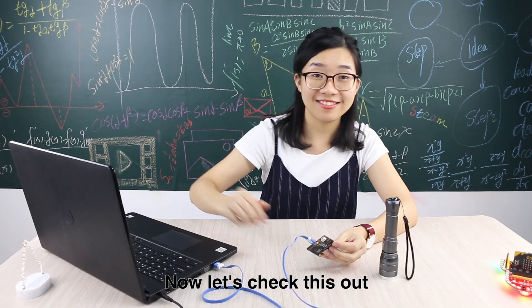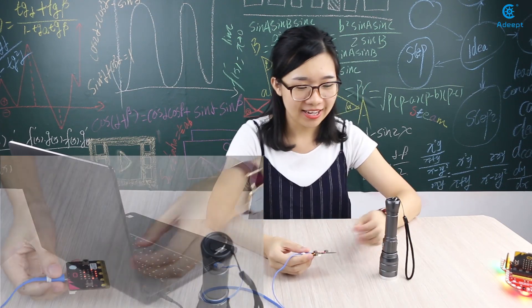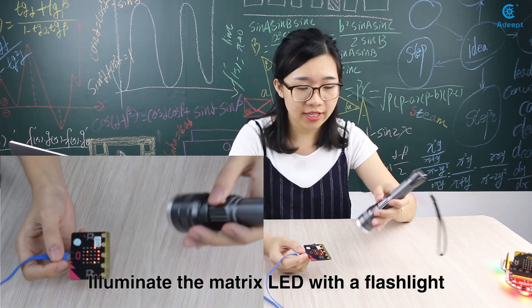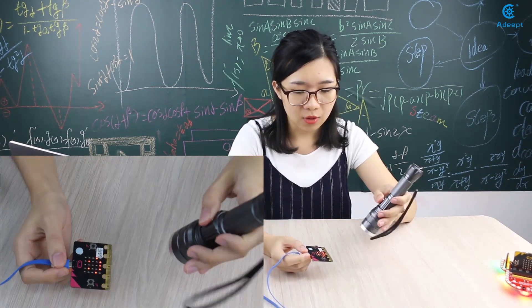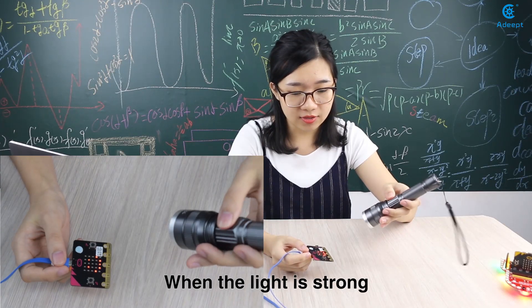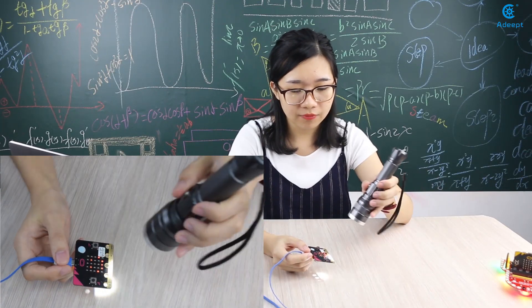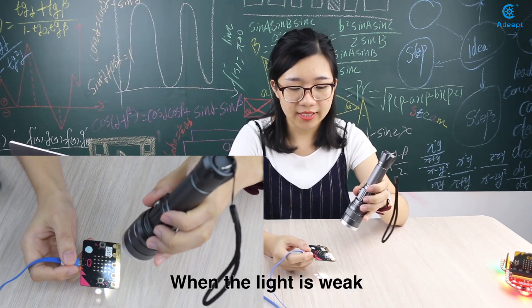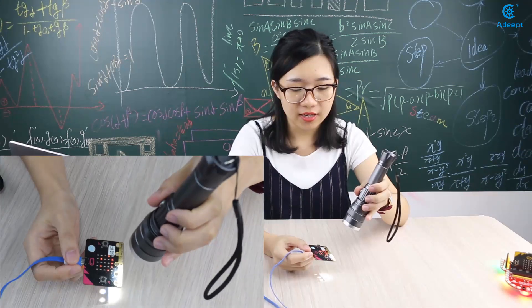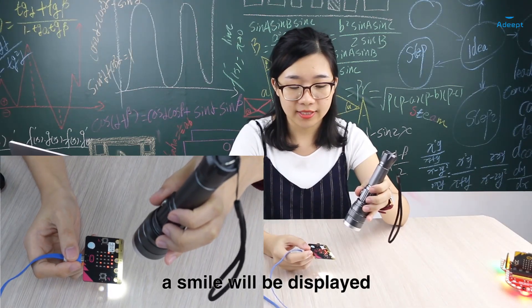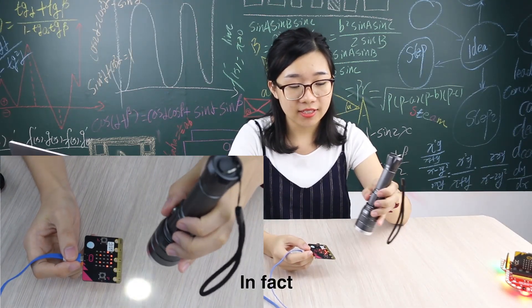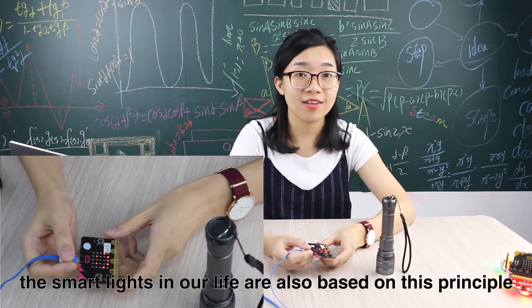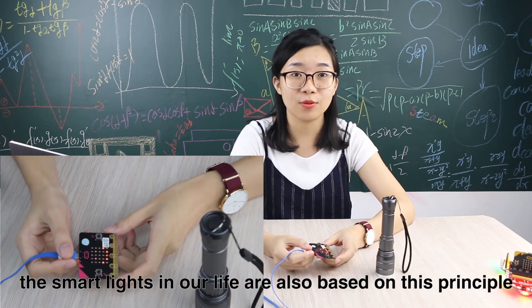Now let's check this out. Illuminate the matrix LED with a flashlight. When the light is strong, nothing will be displayed. When the light is weak, a smile will be displayed. In fact, the smart lights in our life are also based on these principles.